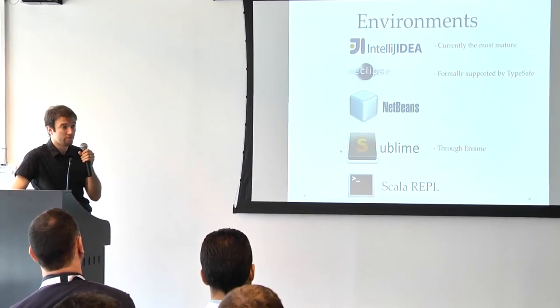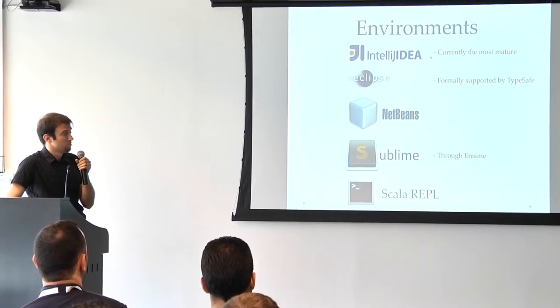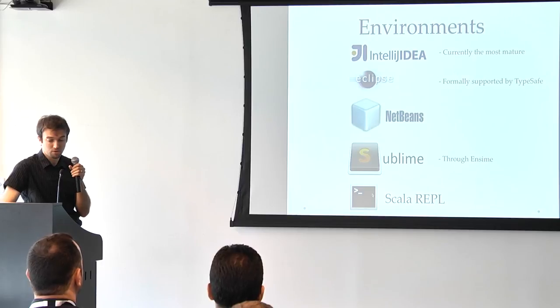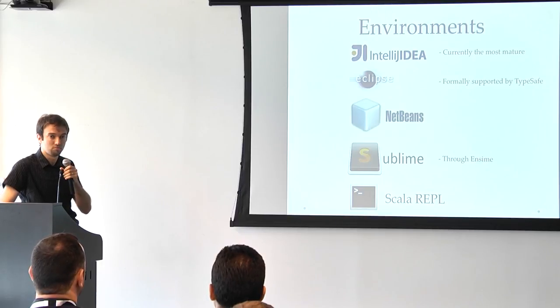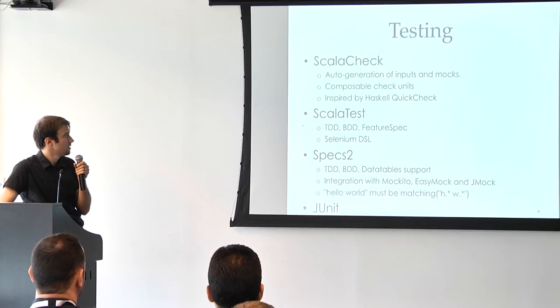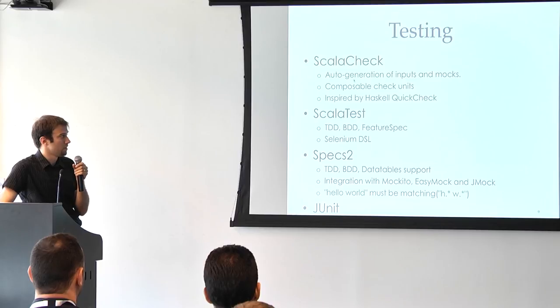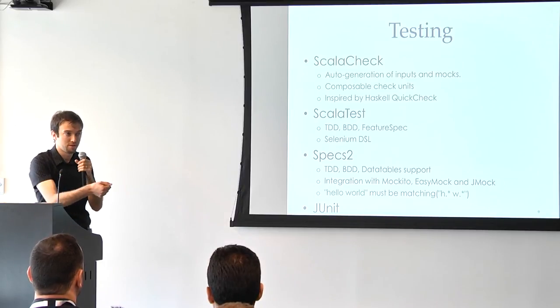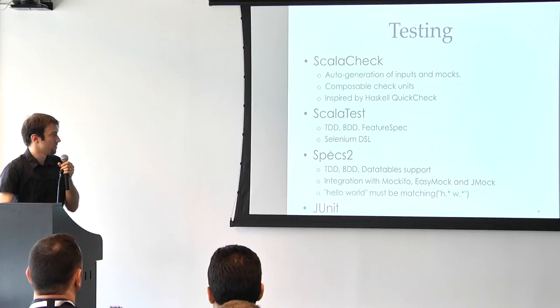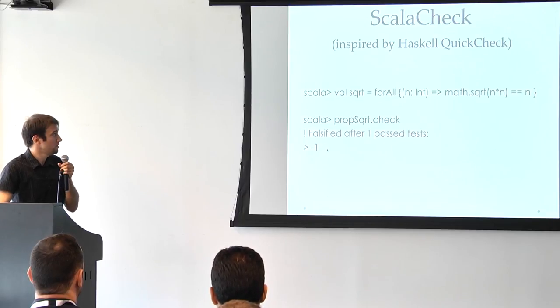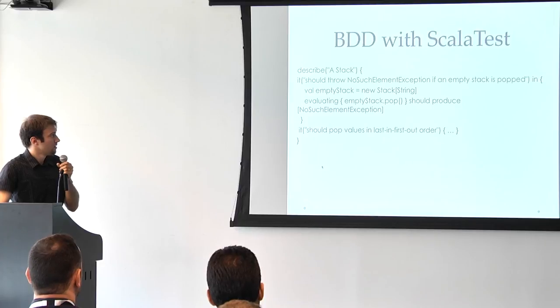These are the recommended environments. They have their own pros and cons. And also Scala has the REPL, which means that you can actually just use the console just like you would expect with Python or other languages. Scala Check is a cool framework that allows you to generate the values that will make the test fail automatically. But you also have all the very powerful testing frameworks, Scala Test and Specs Two. And obviously you can still use JUnit.